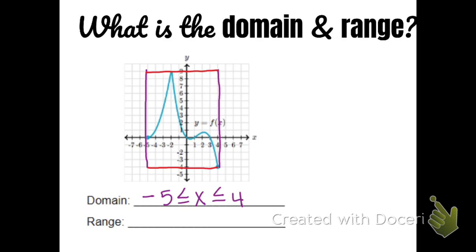The y values represent the range — where is the graph going up and down? What is the lowest point? It goes all the way down to negative 4 and stretches all the way up to 9. So the y values are in between negative 4 and 9, with less than or equal signs saying y is scrunched in between negative 4 and 9.